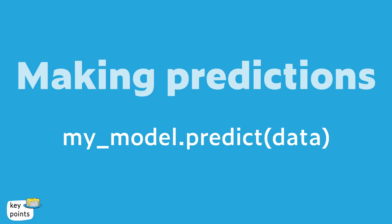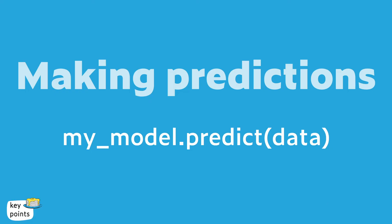Making predictions is what happens once we've built a model and we want to generalize it, extend it, or apply it to data that it's never seen before. I know it's a bit silly to talk about what a model sees since technically it's a piece of code and it doesn't have eyes, but just roll with me on this one. A general way to write making predictions would be something like my_model.predict, and then in parentheses, data.